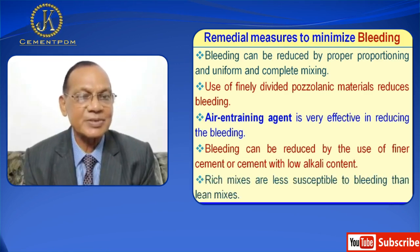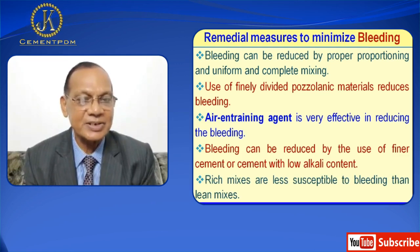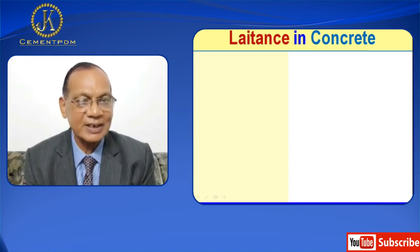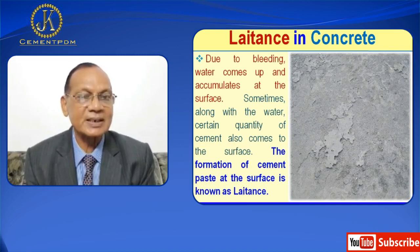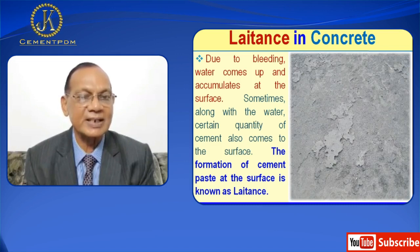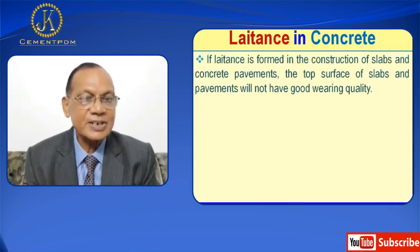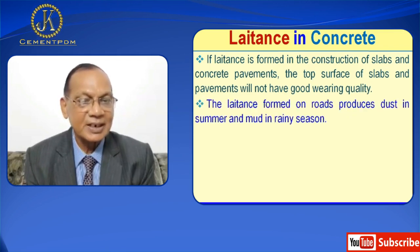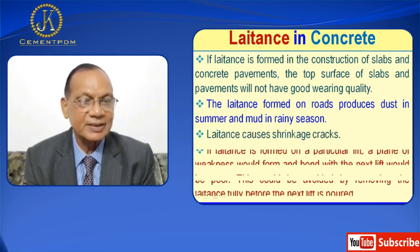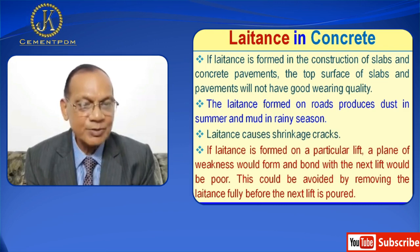Now I will discuss laitance. Due to bleeding, water comes up and accumulates at the surface. Sometimes along with the water, a certain quantity of cement also comes to the surface. The formation of cement paste at the surface is known as laitance. If laitance is formed in the construction of slabs and concrete pavements, the top surface will not have good bearing quality. The laitance formed on roads produces dust in summer and mud in the rainy season. Laitance causes shrinkage cracks. If laitance is formed on a particular lift, a plane of weakness would form and bond with the next lift would be poor. This could be avoided by removing the laitance fully before the next lift is poured.